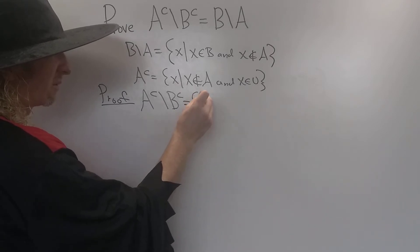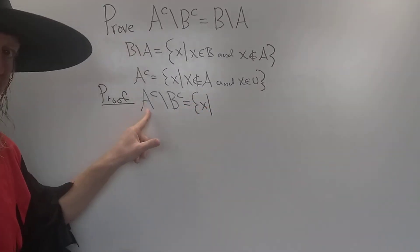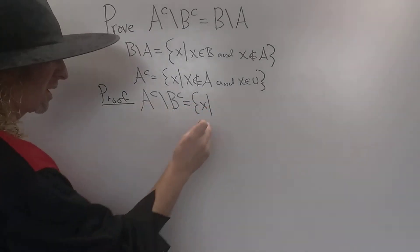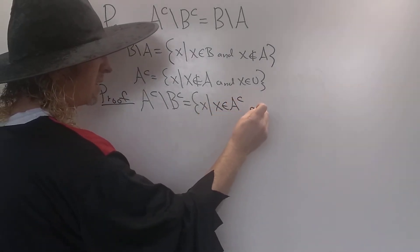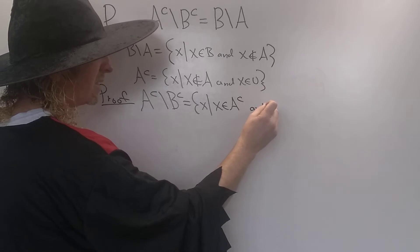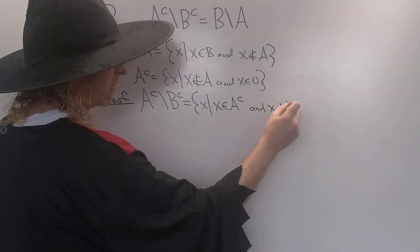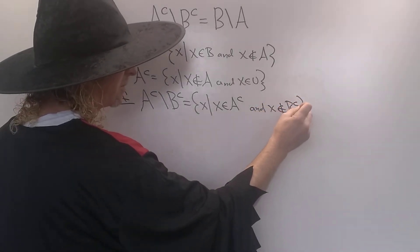This is equal to the set of all X's such that X is in this set, but it's not in this set. So X is in A complement, and X is not in B complement.